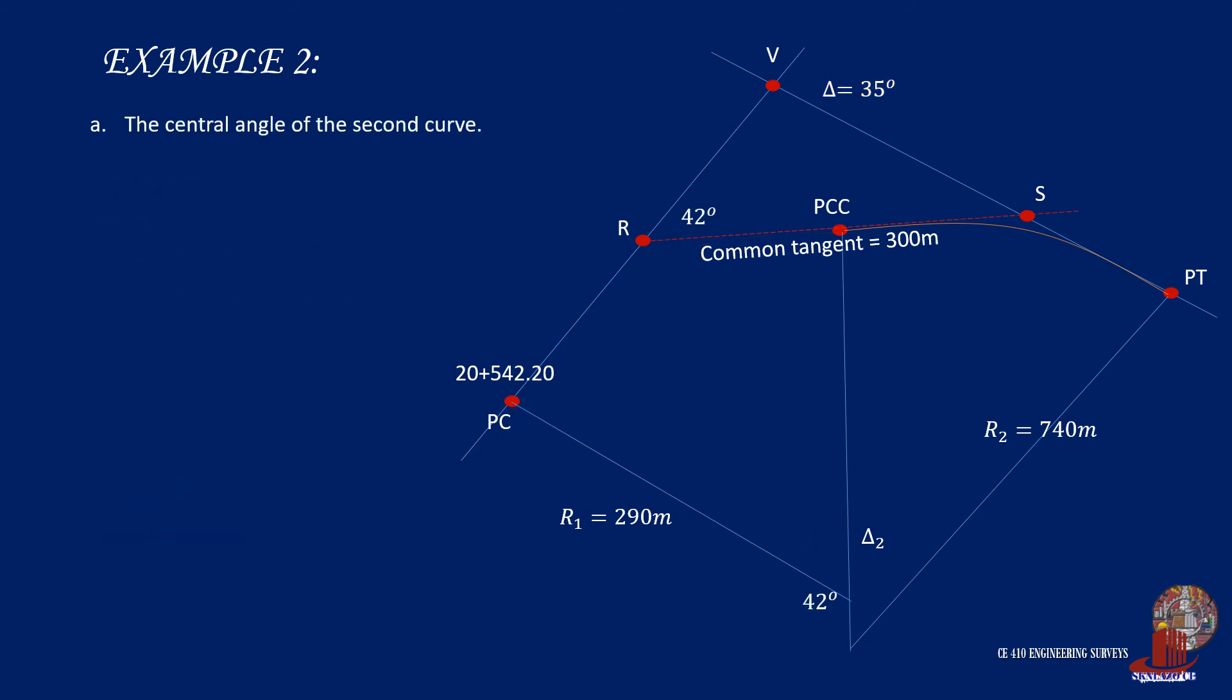Knowing R2 at this point, with a given value of radius 2, we can solve for delta 2 from the formula R2 times tangent of half of delta 2, which gives delta 2 as 28 degrees 36 minutes.